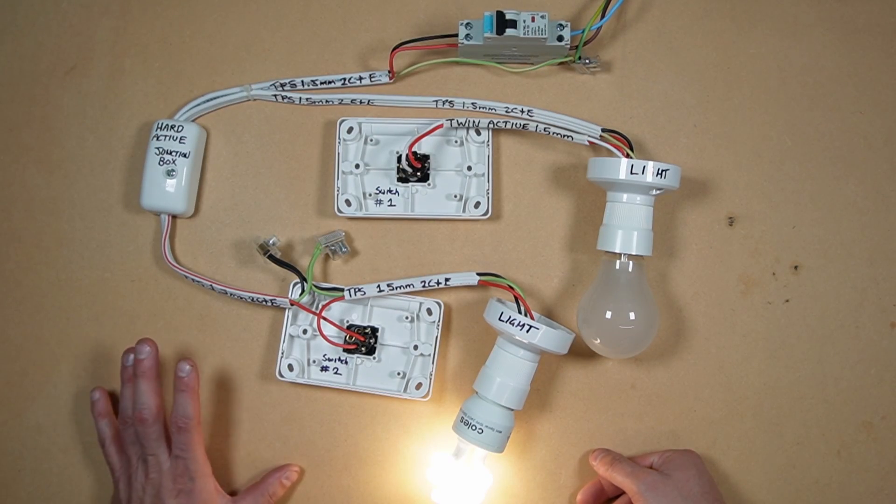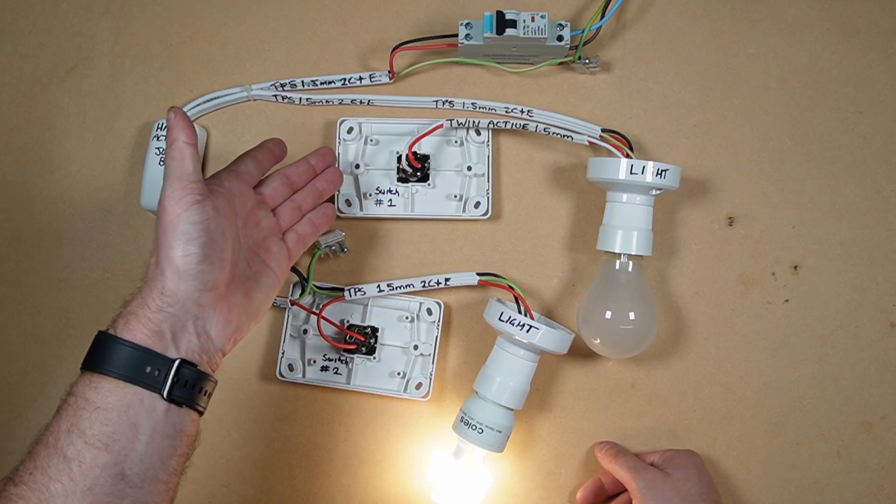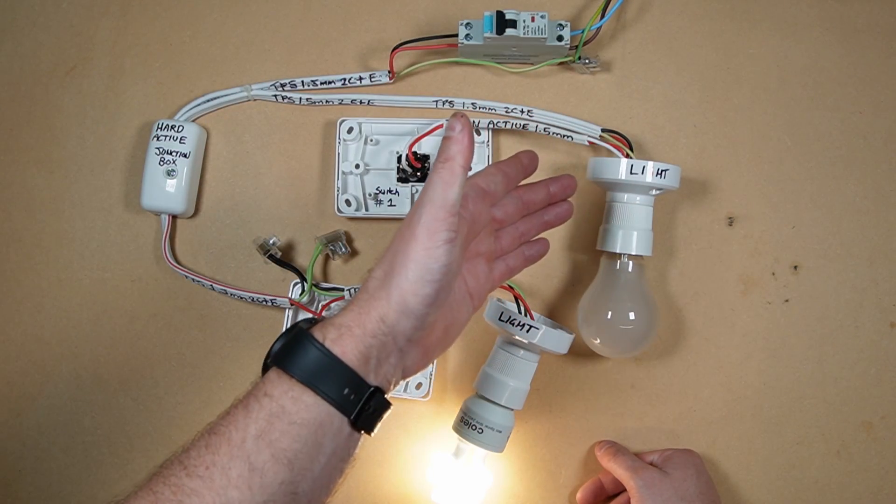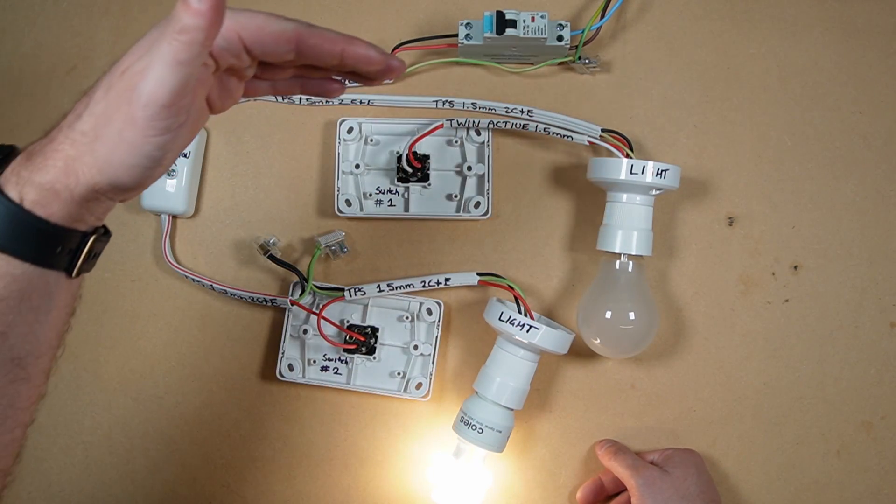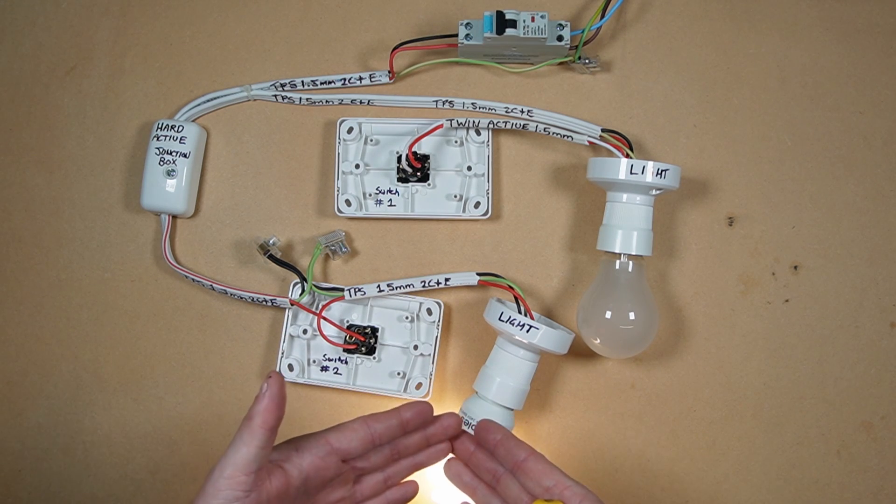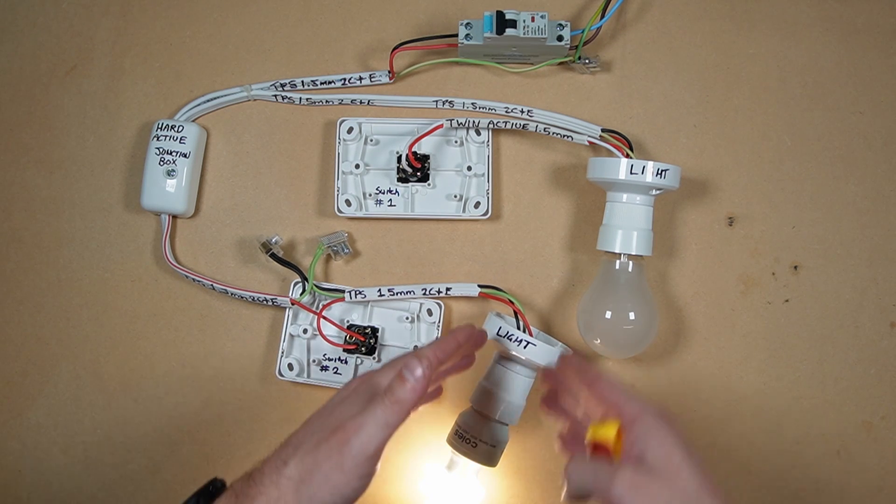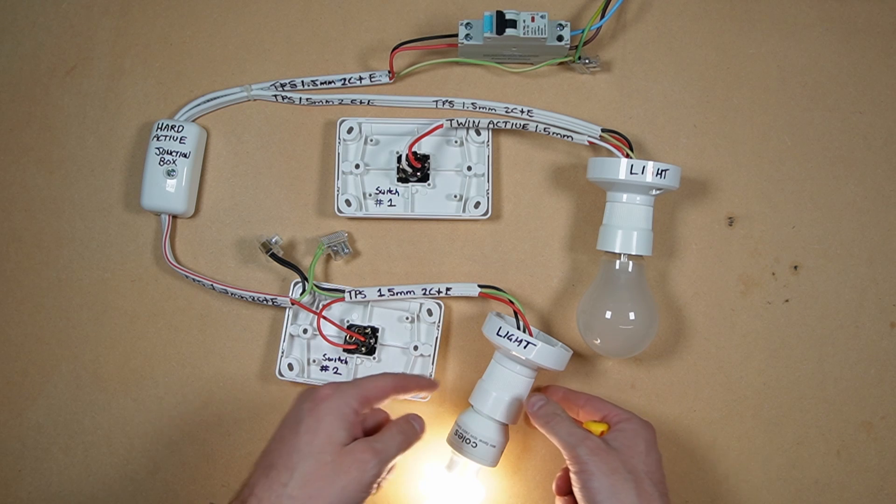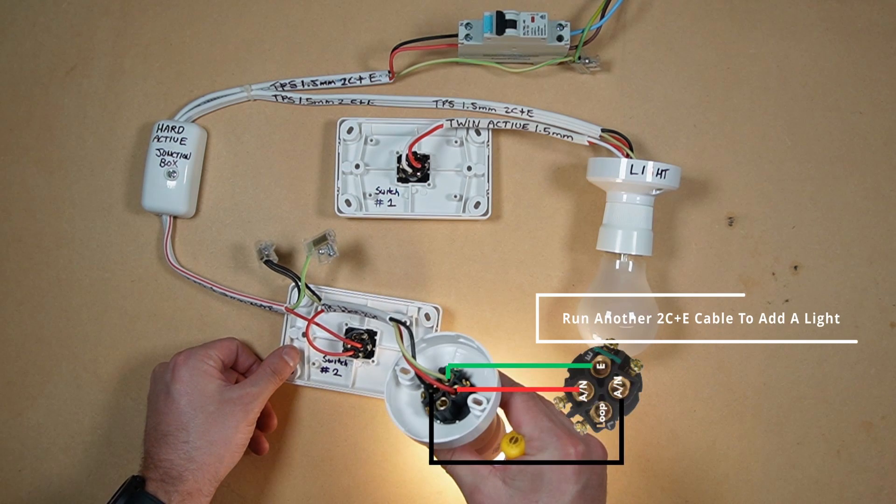So that's it guys, that's how a single switch controls the single light in the looping at the light method and the looping at the switch method. If you were to add another light off both of these methods, with the looping at the switch method it's quite simple—you just join your active, neutral, and earth together in here and run that over to another light and just daisy chain.